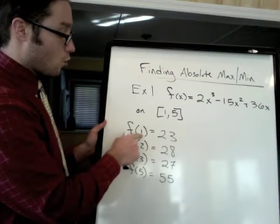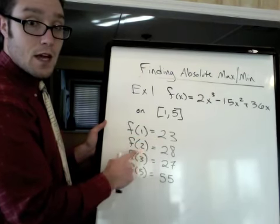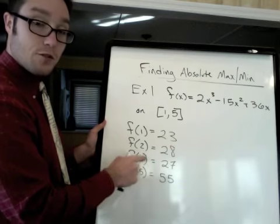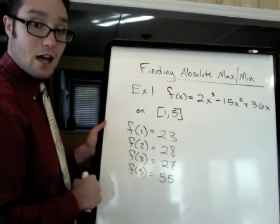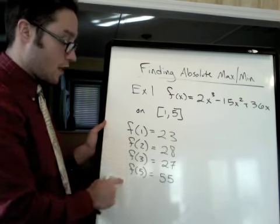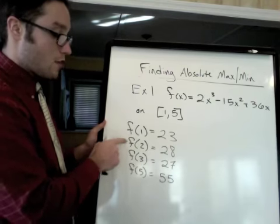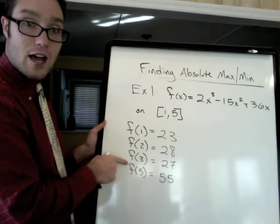That's step 2 of this process. So I did that already. If you plug in 1, you get 23. f(2) is 28. f(3) is 27. And f(5) is 55. All I did was I plugged in the two endpoints and the two stationary points we just found out.